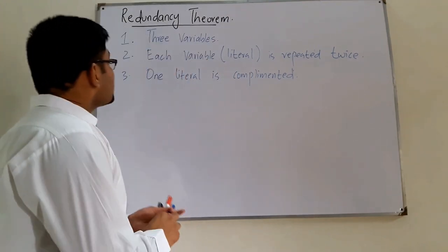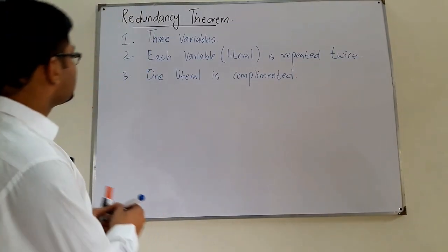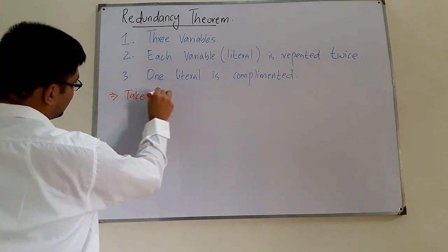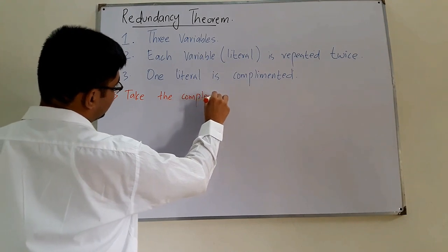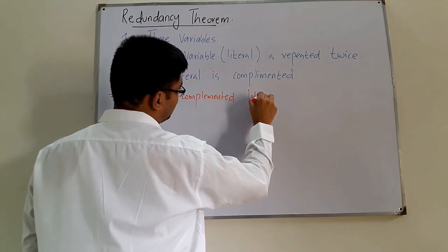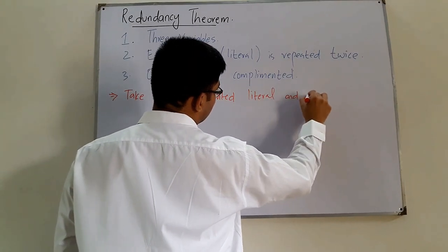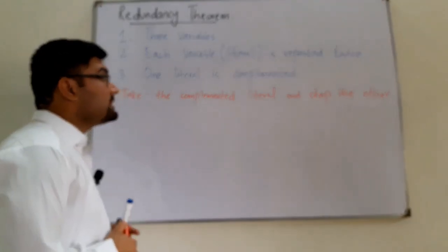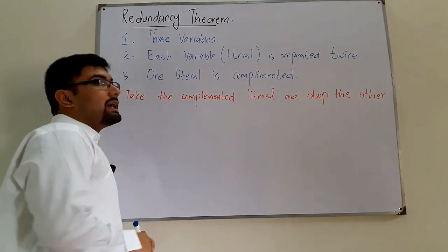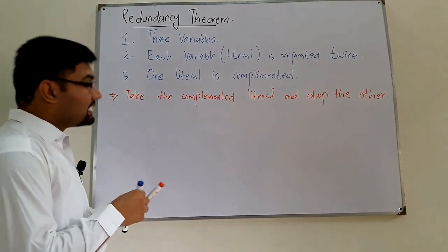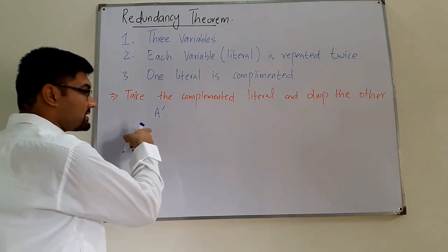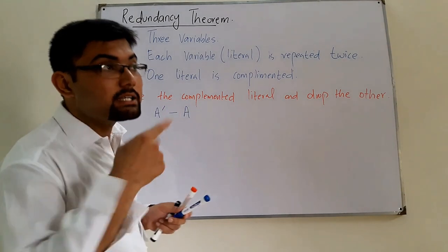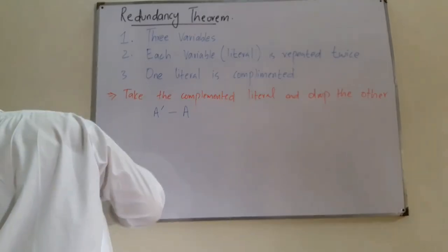Once these three conditions are met, you take the complemented literal and drop the other term. By 'complemented literal' we mean not only the term that is complemented — the term containing its uncomplemented form must also be taken. For example, if A is complemented, you take the term containing A-complement and also the term containing A.